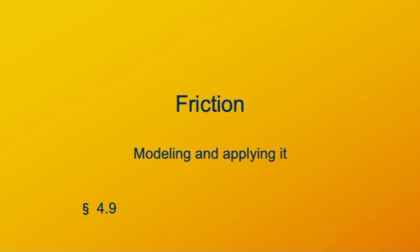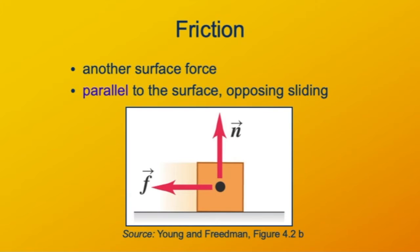The force of friction. Remember I promised we were going to talk about two surface forces — the normal force was one of them, and there was going to be a parallel force? Here it is! It's friction! Friction turns out to be a very complex force. We're going to model it with a very simple model, which really doesn't deserve to work, but empirically it works shockingly well. What the force of friction does is oppose motion relative to the surface — sliding along the surface. If two surfaces are moving relative to each other, friction wants to slow down their relative motion and make them stop and stick together.